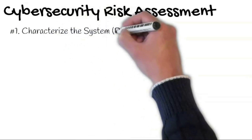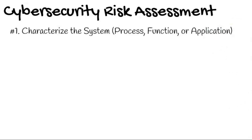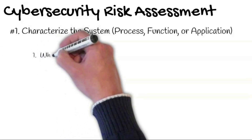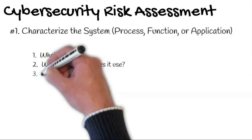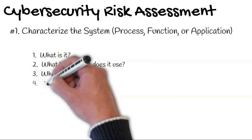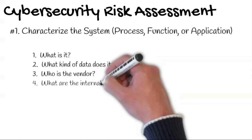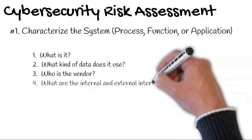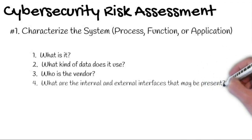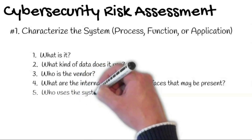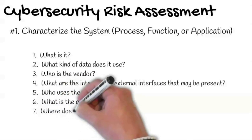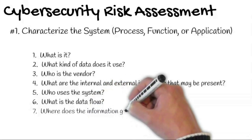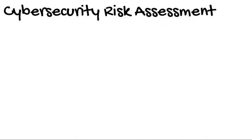The first step is to characterize the system, process, function, or application. Characterizing the system will help you determine the viable threats. This should include: one, what is it; two, what kind of data does it use; three, who is the vendor; four, what are the internal and external interfaces; five, who uses the system; six, what is the data flow; and seven, where does the information go.